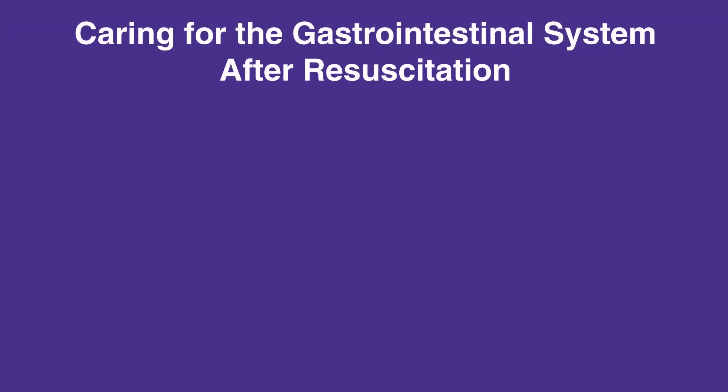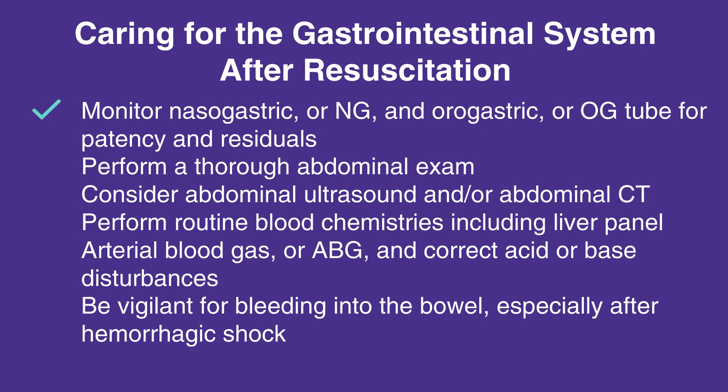When caring for the gastrointestinal system after resuscitation, follow this checklist. Monitor nasogastric, or NG, and orogastric, or OG, tube for patency and residuals. Perform a thorough abdominal exam. A tense abdomen may indicate bowel perforation or hemorrhage. Consider abdominal ultrasound and/or abdominal CT. Perform routine blood chemistries including liver panel. Arterial blood gas, or ABG, and correct acid or base disturbances. Be vigilant for bleeding into the bowel, especially after hemorrhagic shock.